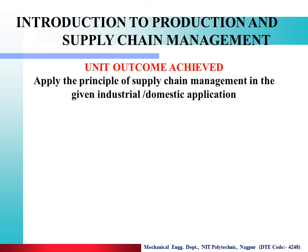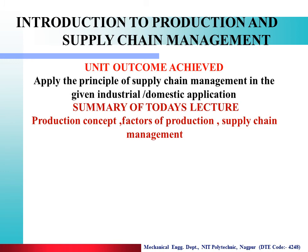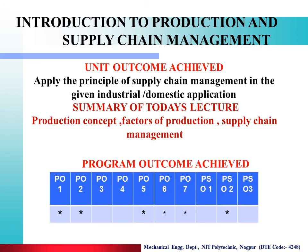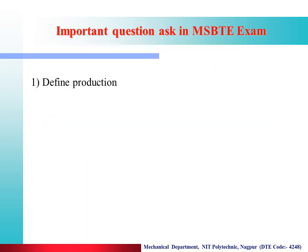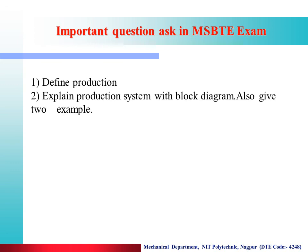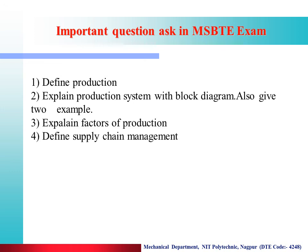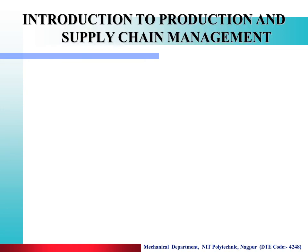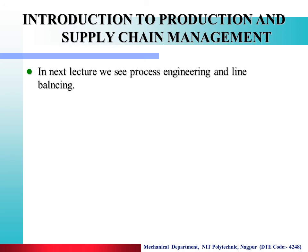The unit outcome achieved in today's lecture: apply the principles of supply chain management in given industrial and domestic applications. Summary: today we covered the production concept, factors of production and supply chain management. Program outcomes achieved: PO1, PO2, PO5, PO6, PO7 and PSO2. Important questions asked in the MSBTE exam: define production; explain the production system with block diagram and give two examples; explain factors of production; define supply chain management; state objectives of supply chain management; explain the concept of supply chain management. In the next lecture we will see process engineering and line balance.